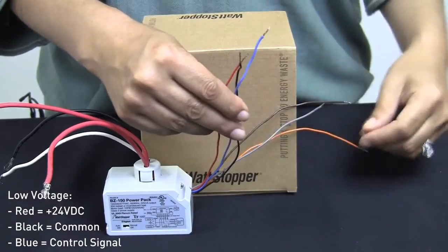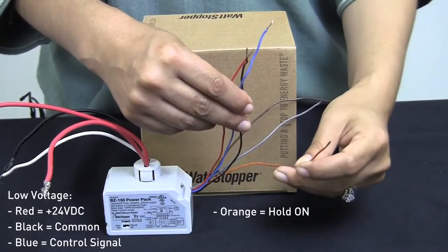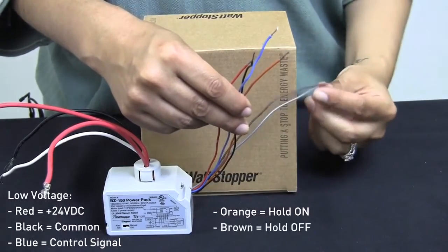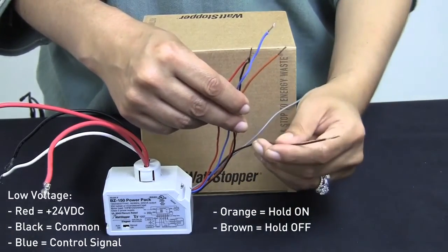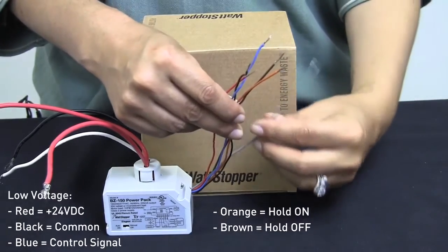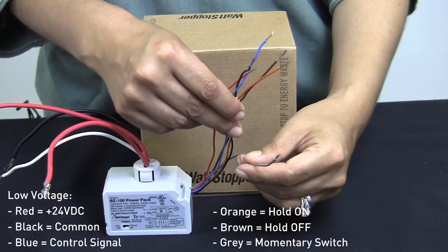The orange wire is your hold on, the brown wire is your hold off input, and the gray wire is your momentary switch input.